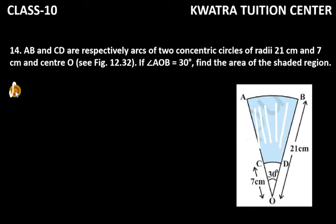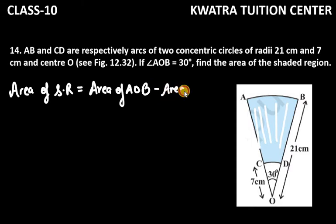So what we have to write is: area of shaded region equals area of sector AOB minus area of sector COD.